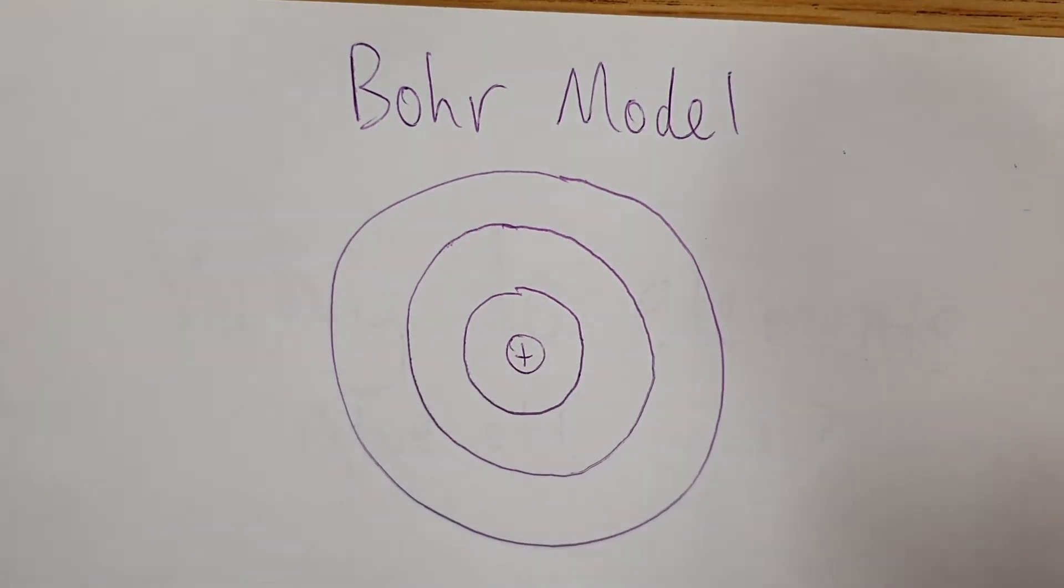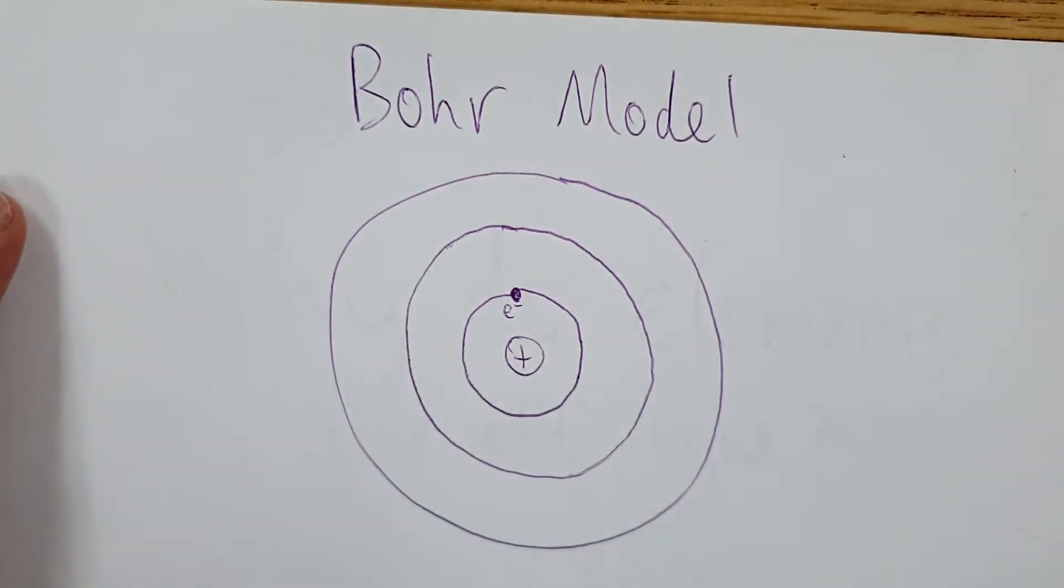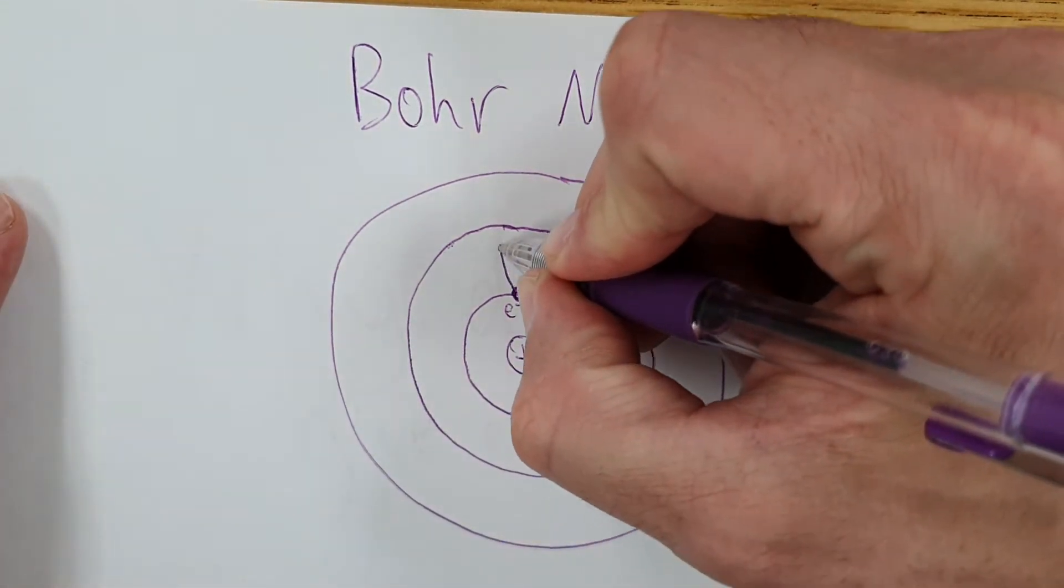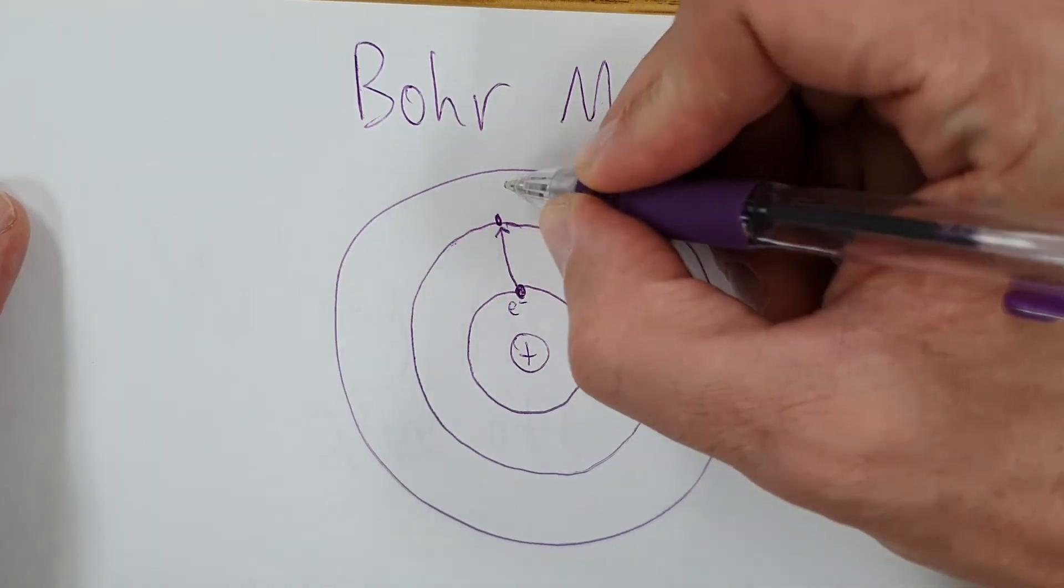So he said okay, electrons might start at one energy level, that's e minus for electron right there. If it absorbs energy it can rise to a higher energy level, either go up one or go up two or whatever it may be.